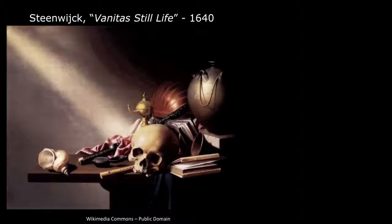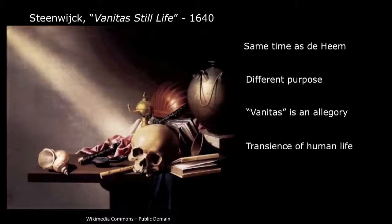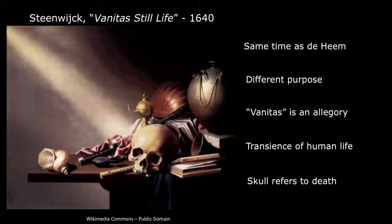The third Baroque painting we're looking at is by Steenwijck, called A Vanitas Still Life from 1640. This painting was done at the same time as de Heem's painting, but serves a different purpose. This vanitas is an allegory of human vanities, and the objects are meant to show the viewer the transience of human life and the ultimate futility of all human endeavors. The skull refers to death, while the other objects symbolize knowledge, pleasure, power, and wealth. The beam of light draws the viewer's attention to the human skull at the center of the arrangement.